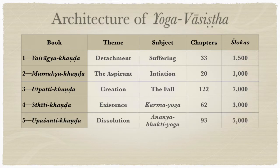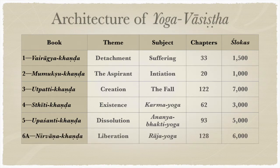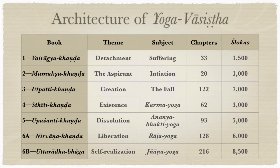Book Five is called Upashanti Khandha, about dissolution of material existence, with ananya bhakti as its subject. It has 93 chapters and 5,000 shlokas. Book 6A, Nirvana Khandha, is about liberation with raja yoga or meditation as its subject — 128 chapters and 6,000 shlokas. Finally, Book 6B is about the ultimate goal of self-realization and jnana yoga, the longest book with 216 chapters and 8,500 shlokas.